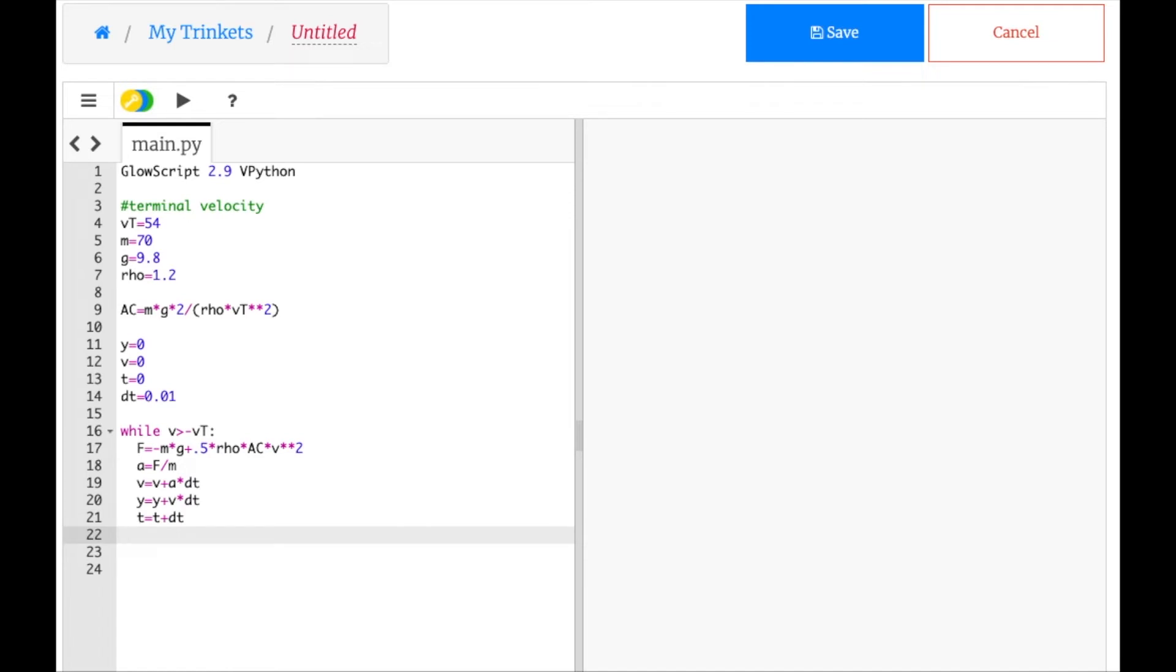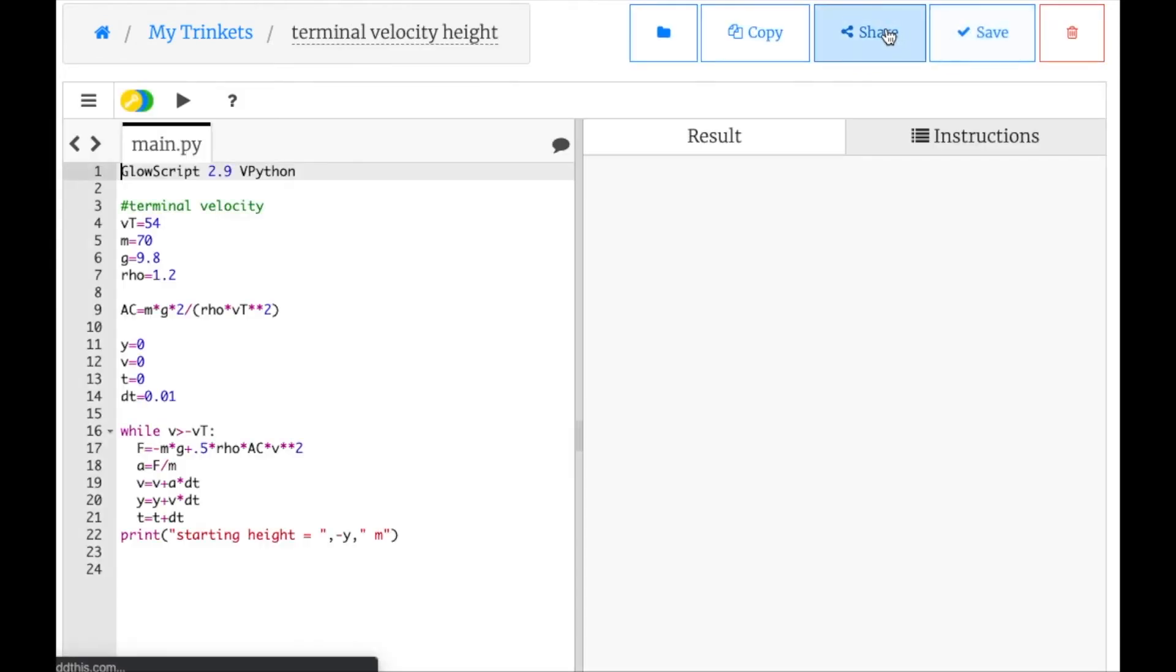And then that should be it. And then let's just print height, starting height equals. And let's put this as a negative number. Negative y just so it'll look cool. Meters. And let's save that. And then see what happens. I don't know why it's slow. Unless I made it so that it never ends.